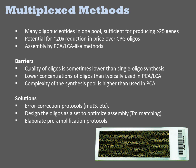Here, many oligonucleotides are synthesized in a pool, and the mixture is sufficient to produce more than 25 genes. In some embodiments, the number of genes assembled from one pool is in the hundreds or even thousands.